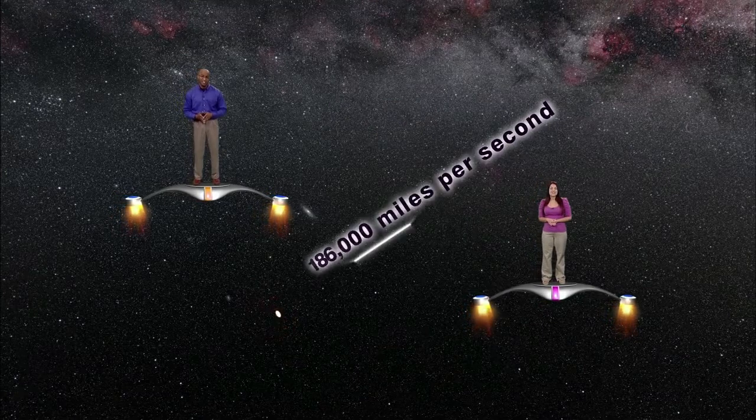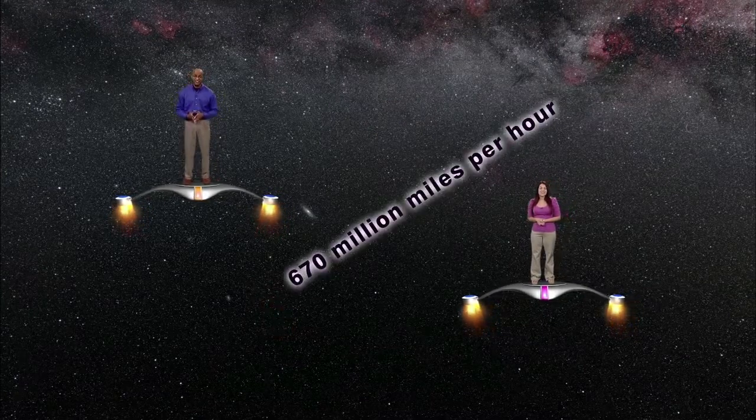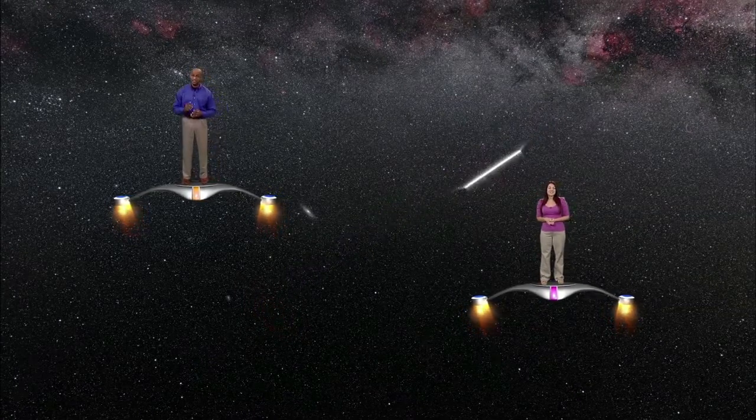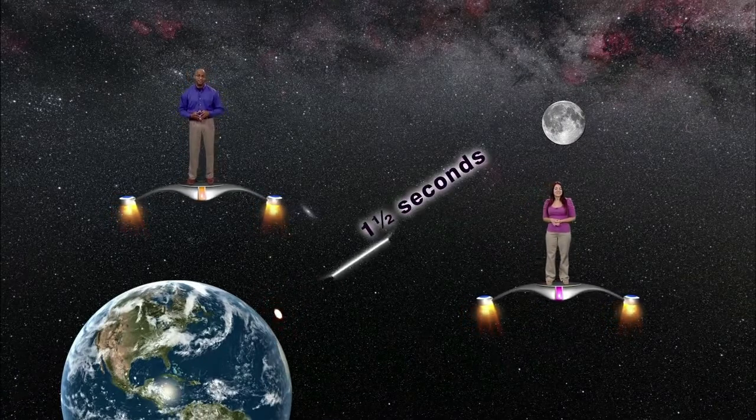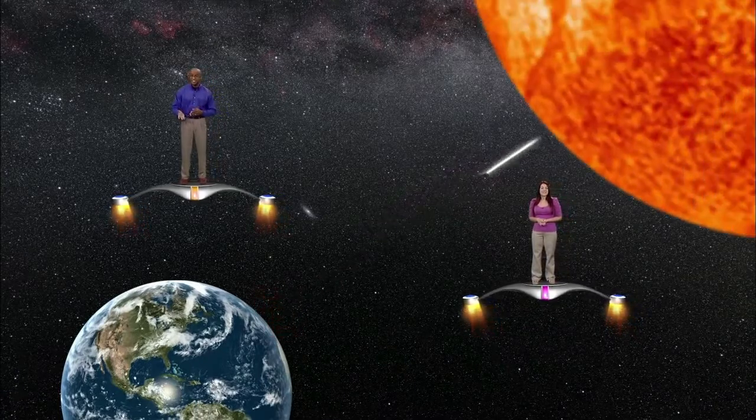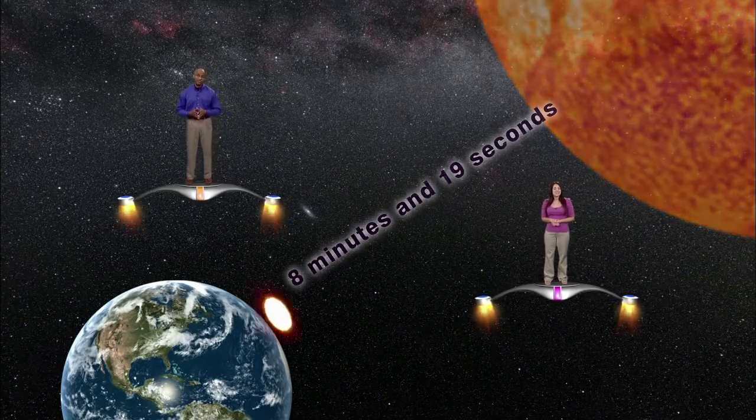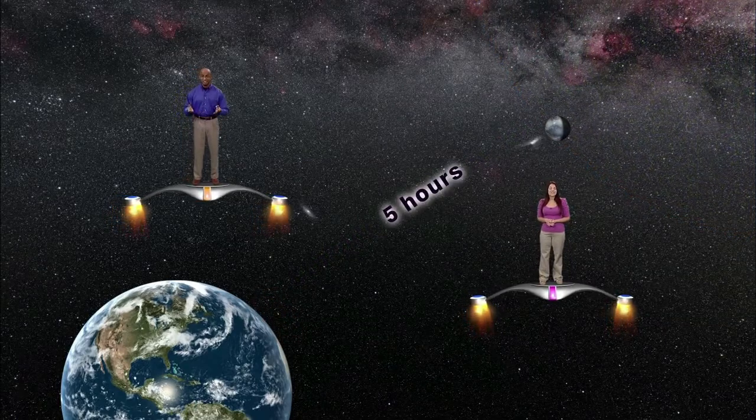Light travels at a whopping 186,000 miles per second, which is almost 670 million miles per hour. This means that if you were to travel at the speed of light from the Earth to the moon, you could make the trip in a little less than one and a half seconds. If you traveled from the Earth to the sun at the same speed, you could make the trip in a little over eight minutes. And if you were to travel from the Earth to Pluto at the speed of light, you could make the trip in a little over five hours.